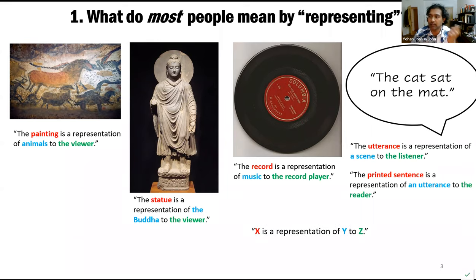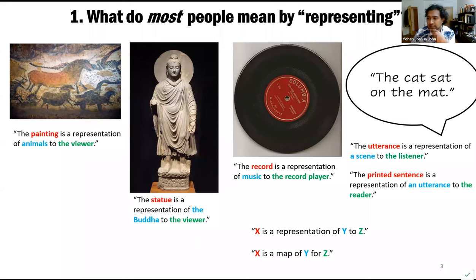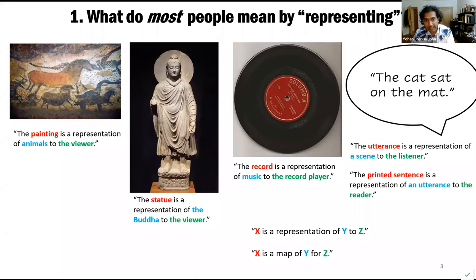So we have a little formula: X is a representation of Y to Z. And in the context of neuroscience, it's important to recognize that 'X is a map of Y for Z' is a particular subclass of representation that's very commonly used, and as far as I'm concerned, these are basically synonymous.